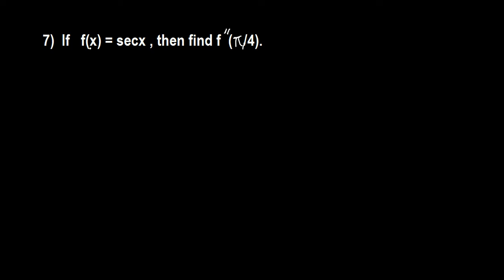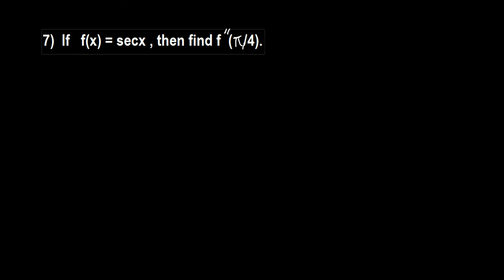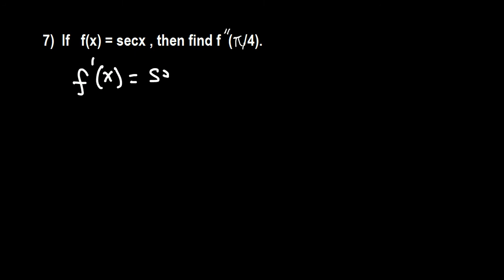In this question we are given the function f equals secant x and we need to find f double prime, the second derivative of this function evaluated at pi over 4. So the function is secant x, and its derivative — the derivative of secant x — is secant x times tangent x.